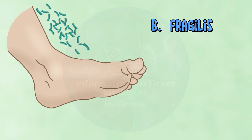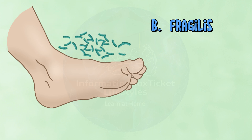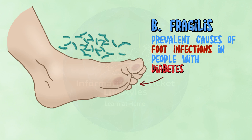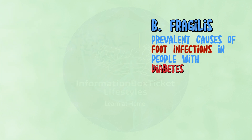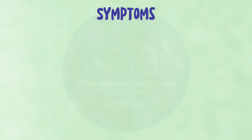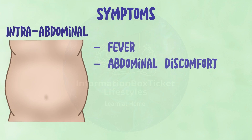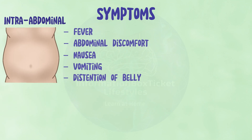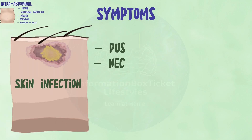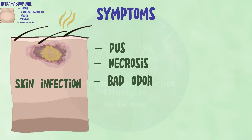Whereas Bacteroides fragilis is not found in the natural skin flora, it is one of the most prevalent causes of foot infections in diabetics. Symptoms vary greatly depending on the place of infection. Intra-abdominal infections, for example, can cause fever, abdominal discomfort, nausea, vomiting, and distension of the belly. Pus, necrotic tissue, and a foul odor are all signs of anaerobic infections in skin.